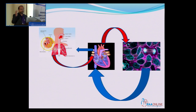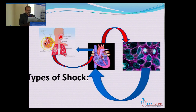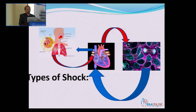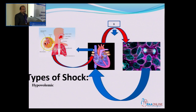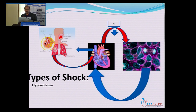Blood returns to the right side of the heart, gets pumped into the lungs, gets oxygenated, and comes back to be recirculated from the heart again. We will use this to understand the different types of shock. The cardiovascular system can fail because we do not have enough circulating volume — that is hypovolemic shock.